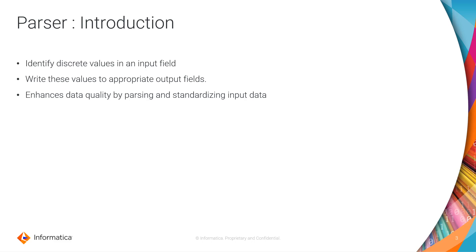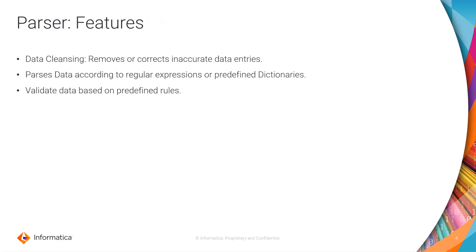As you can see, the input column will contain multiple data, but you can standardize it according to your use case and separate the fields. So the features — first, data cleansing: it will remove any incorrect or inaccurate data entries. The input row can contain multiple data, but it will only feed those data to the output rows which match the pattern, or we can say which are accepted as correct entries. You can create certain rules to define what is a correct or valid entry, and it will ignore all invalid entries.